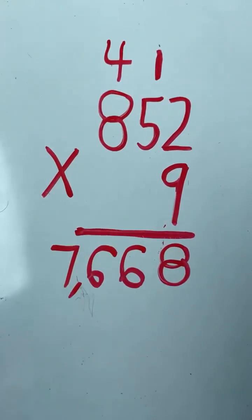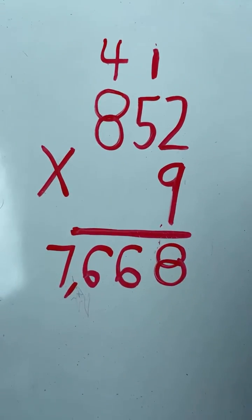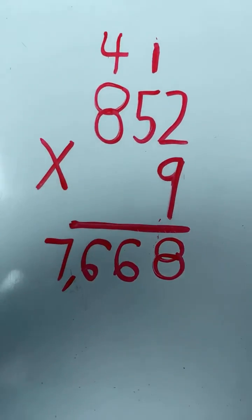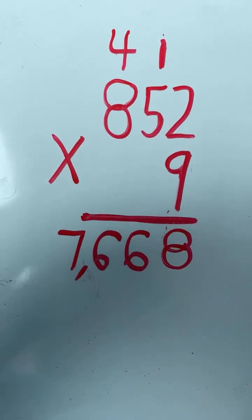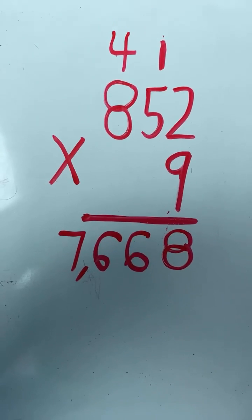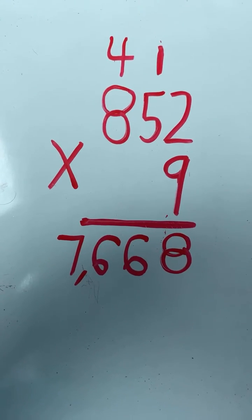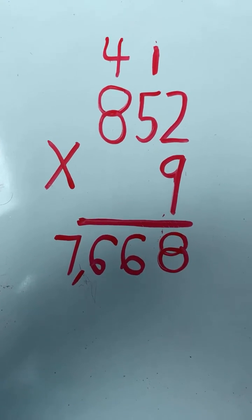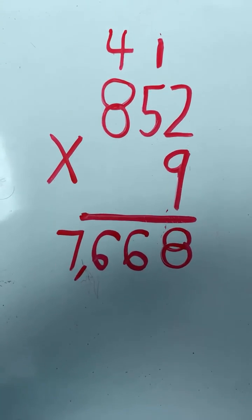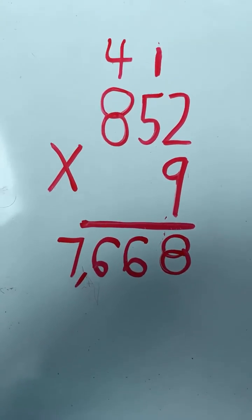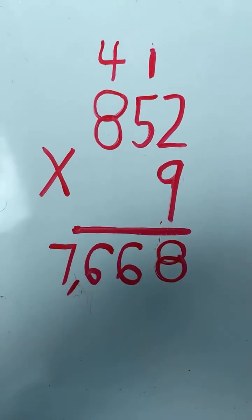And we have our final answer: 852 times 9 equals 7,668. Moving on to the next example.